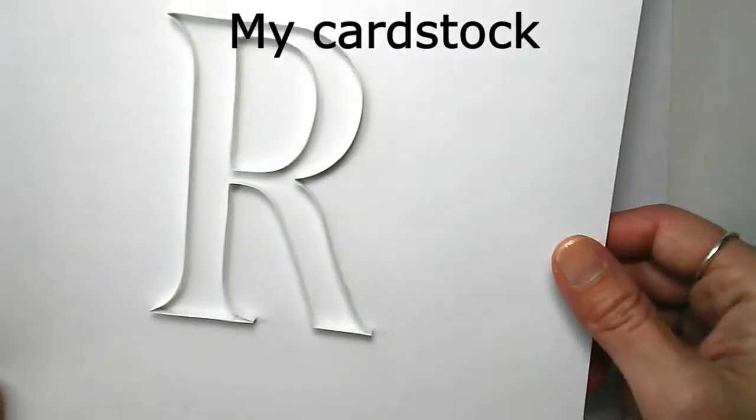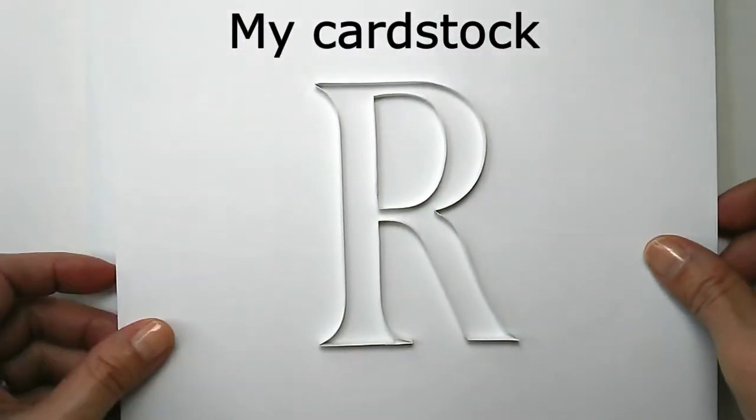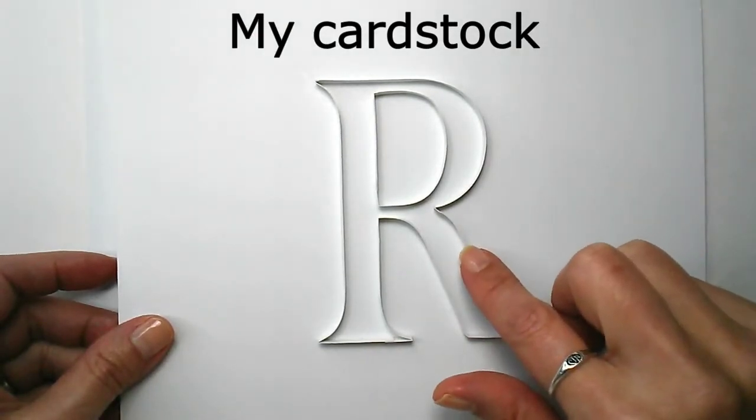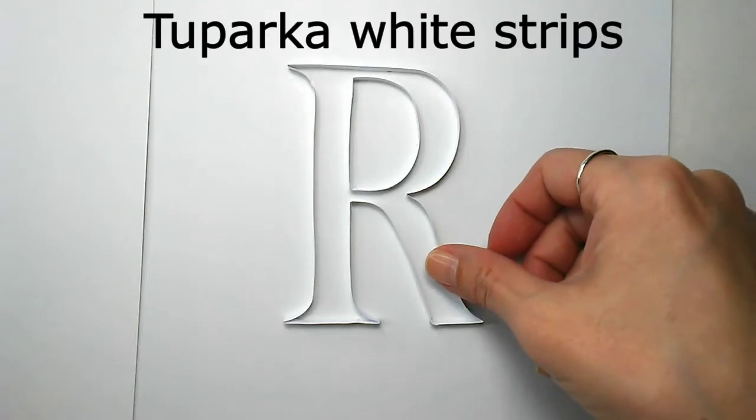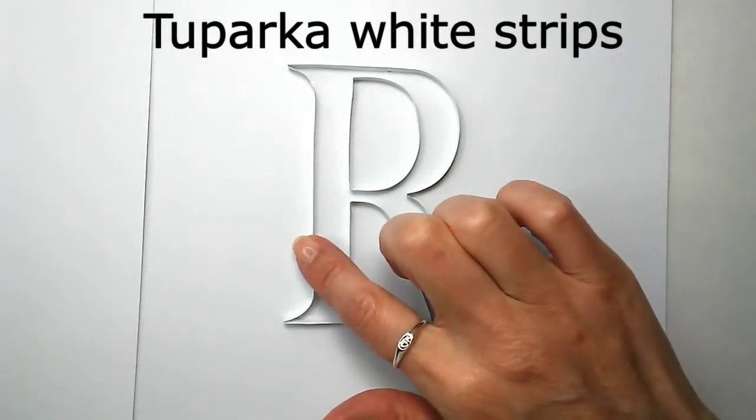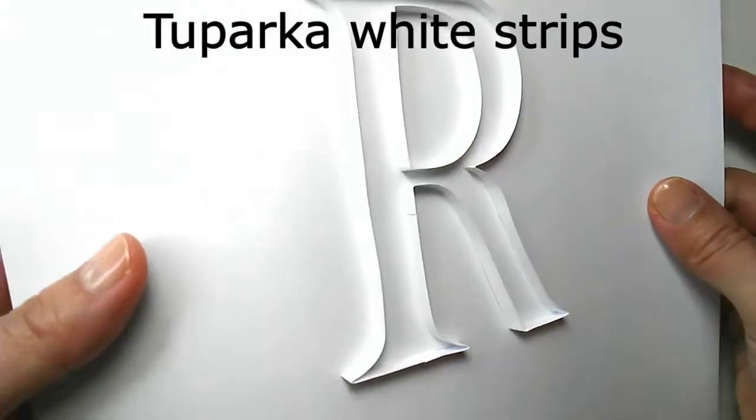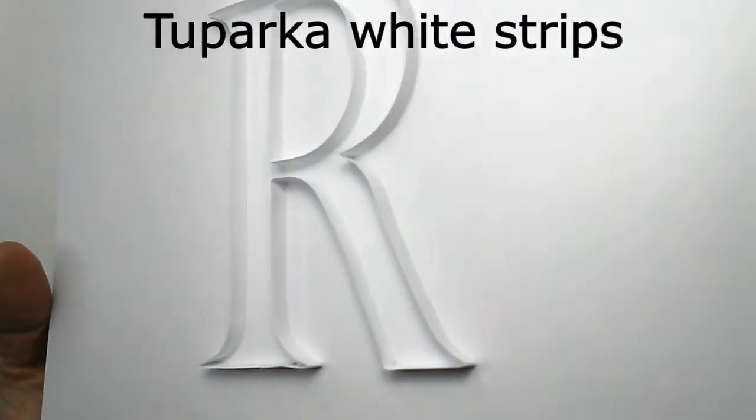I usually make outlines with cardstock. It makes for a nicely stiff outline that matches the background perfectly. You can see the Tuparka strips are definitely a bit more wiggly but the whites match up better than I expected.